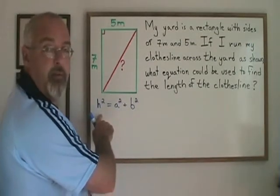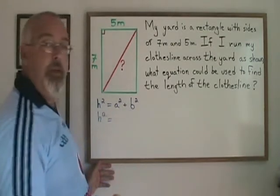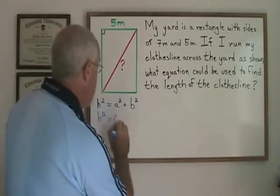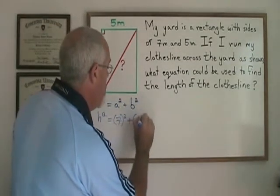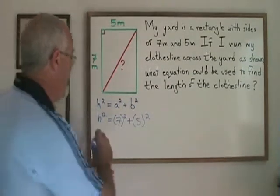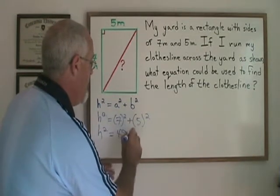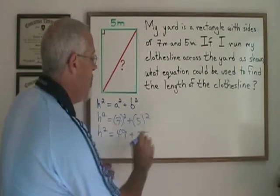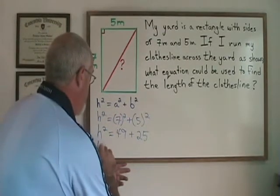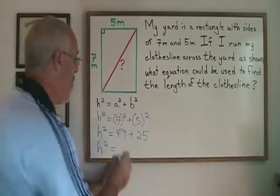h squared — I don't know the hypotenuse of the triangle yet — will be equal to... I can make 7 and 5 my a and my b, so h squared is equal to 7 squared plus 5 squared. 7 squared is 49 and 5 squared is 25, so h squared is going to be equal to 49 plus 25, which is 74.